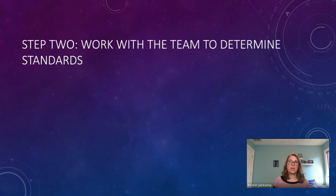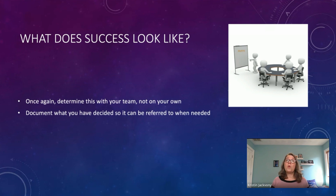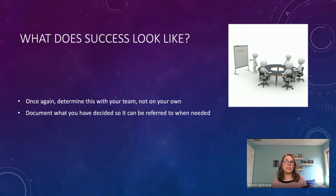Step two: now that you've figured out why you want to automate, work with your team to determine some standards. You and your team should talk about what success looks like — and remember, this is a conversation with your team, not something you decide on your own. Once you've decided what success looks like, document it somewhere — on a wiki page or in your file-sharing software — so you can refer back to it when making decisions about frameworks or cloud providers.